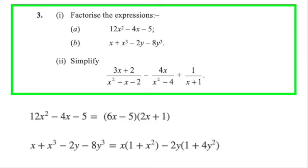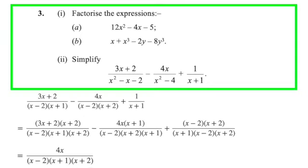For part 2 of the question, we would need to factorize the denominators first like this. We can see that the common denominator would be x minus 2, x plus 2, and x plus 1. So we can multiply each denominator with the factor which is missing, and combine them into a single fraction.